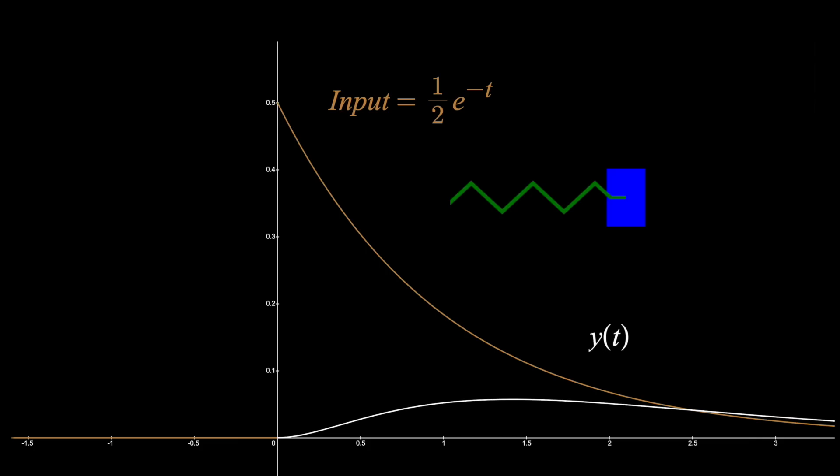In theory, I can walk up to any linear time invariant system at rest and strike it with a hammer, or lightning, and just look at what it does. Then slide that against any new input I want, and I can get the output.